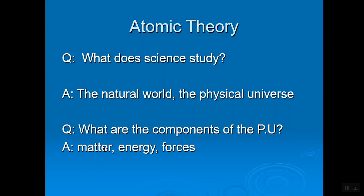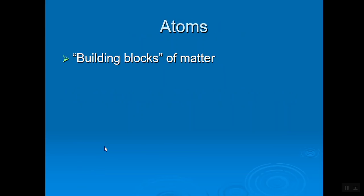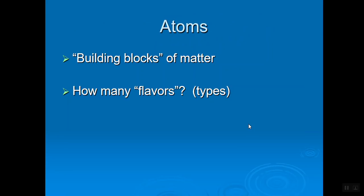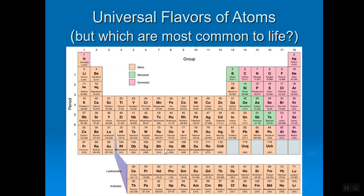Today we're going to focus on matter. Atoms are the building blocks of matter. Even though there's millions and millions of types of substances in the universe, how many flavors of atoms are there? Maybe you recognize your old friend here, the periodic table. Round number, about a hundred. If you want to be more specific, there are 92 naturally occurring elements.